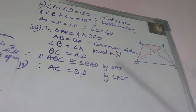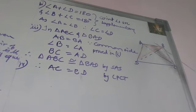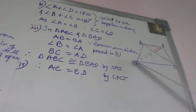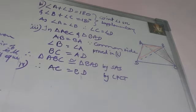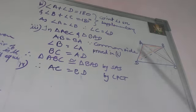For the third part, we prove triangle ABC is congruent to triangle BAD. AB is a common side, angle B equals angle A, and BC equals AD. By SAS, the two triangles are congruent, and hence their corresponding parts give AC equals DB. These are the diagonals of the trapezium, proving the diagonals of an isosceles trapezium are equal.